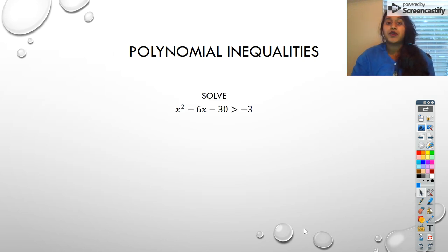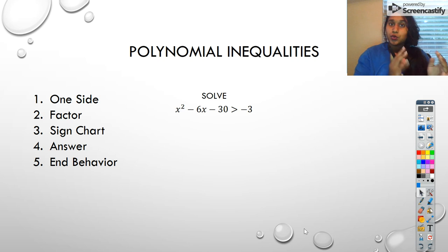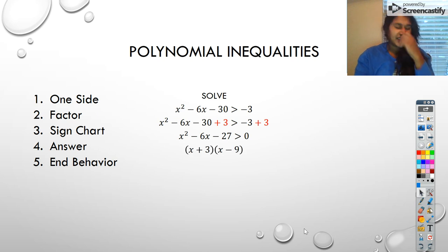So I've got an example here for solving x squared minus 6x minus 30 is greater than negative 3. Let's review those steps. Get everything to one side, factor, use a sign chart, get your answer. The first thing I'm going to do is get everything to one side. I've got a negative 3 over here. So I'm going to add 3 to both sides to move it over. And now I have x squared minus 6x minus 21 is greater than 0. So I can factor that. Two factors of 27 that will get me to 6 is going to be 3 and 9.